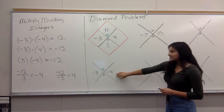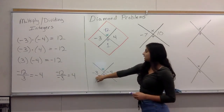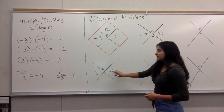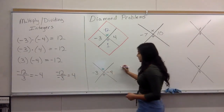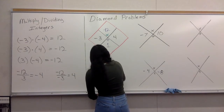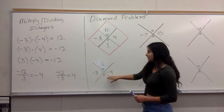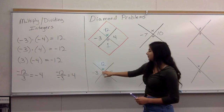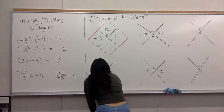Moving on to this one — we have a negative three and a negative four. A negative times a negative equals a positive, so it's going to be positive 12. And you add them on the bottom: negative three plus negative four equals negative seven.